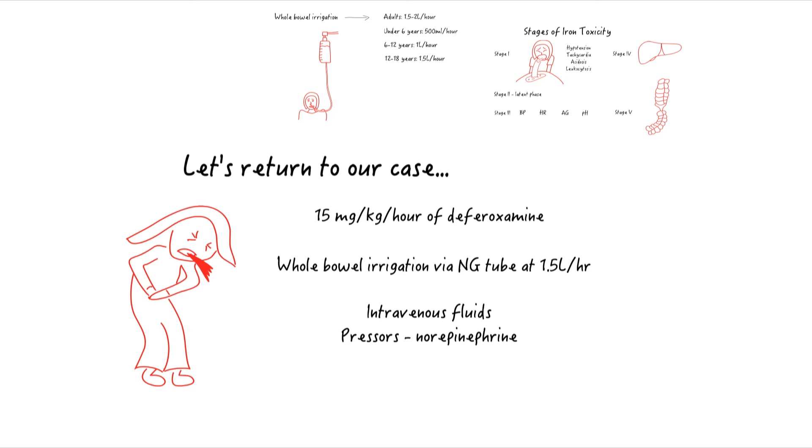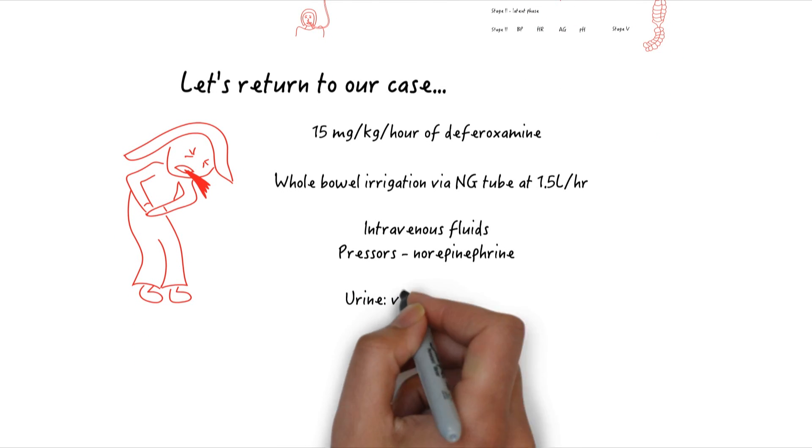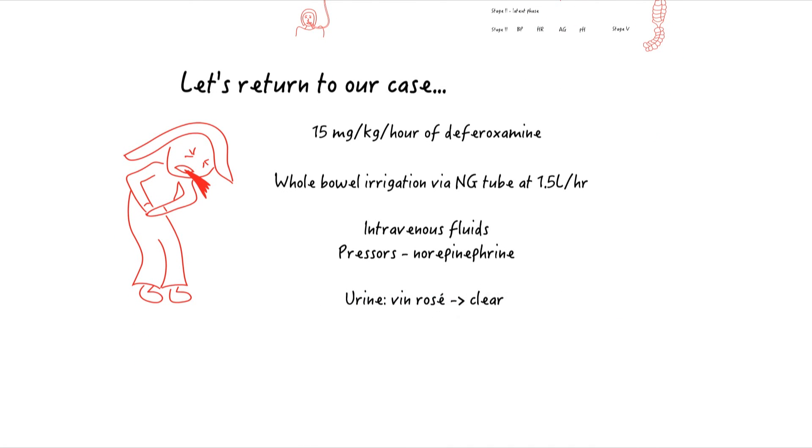Within 16 hours, the patient had resolution of her hypotension. Her urine, initially Van Rosé colored, had become clear. Norepinephrine was weaned off overnight, and her deferoxamine infusion was discontinued the next day. She was subsequently dispositioned to an inpatient psychiatric facility.